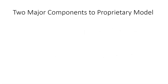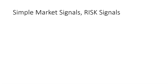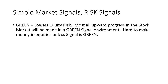There are two major components to the proprietary model: a risk level signal and a general trend indicator. The risk signals are simply green, yellow, and red. The green signal has the lowest equity risk associated with it, and most upward progress in the stock market will be made in a green signal environment. It is hard to make money in equities unless the signal is green.